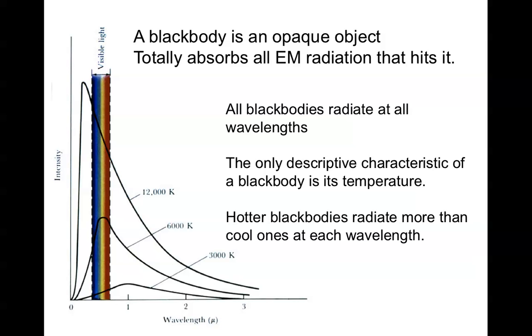A 6,000 degree black body, approximately the temperature of the sun, radiates fairly evenly in the blue and the red, peaking in the yellow, and that's why a star like the sun looks yellow.